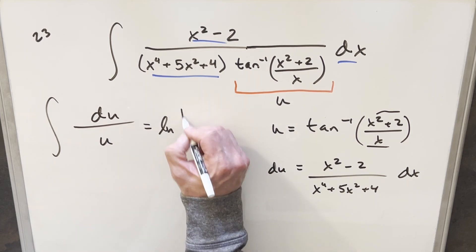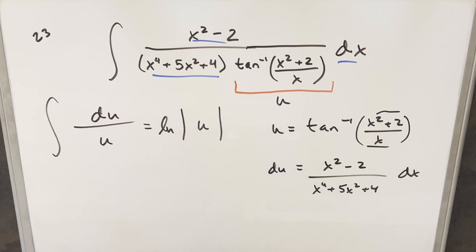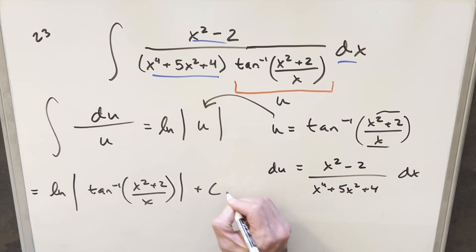Integrating, we get natural log absolute value of u. All I need to do is back substitute in order to finish it off. And for my final solution, we just get natural log absolute value, arctan, x squared plus 2 over x, plus c, and that's it.